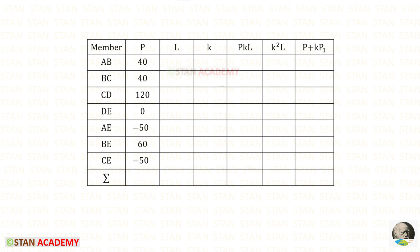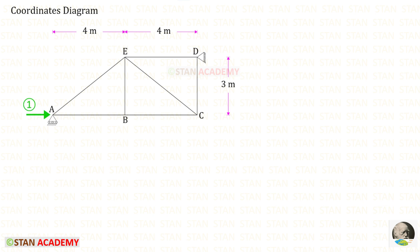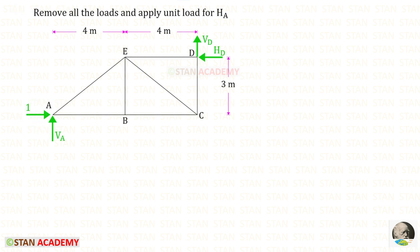Let us enter all the values of P into the table. Now we need to find K — the member forces due to a unit load. We remove all external loads from the truss and apply a unit load in the direction of H_A.